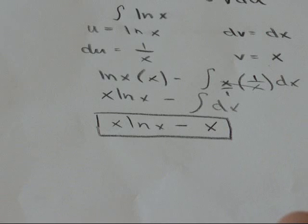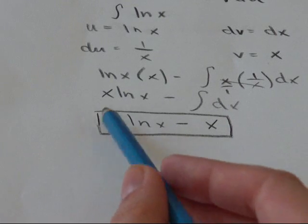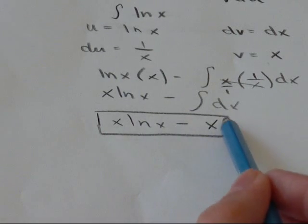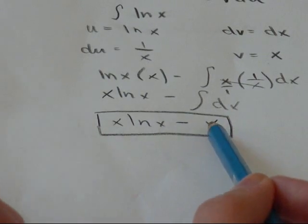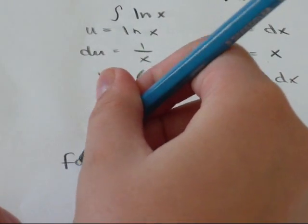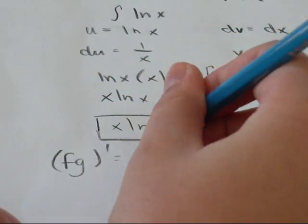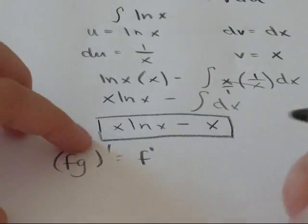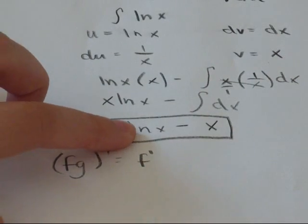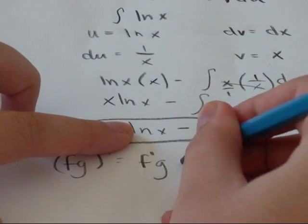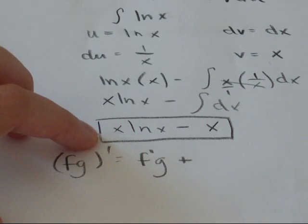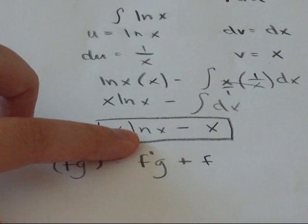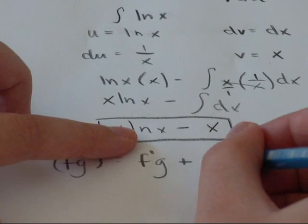But I'm going to check it by using the product rule to find the derivative of this and taking the derivative of this separately. So the product rule says you take the derivative of the first term and leave the second alone and add it to the product of leave the first term alone and take the derivative of the second.